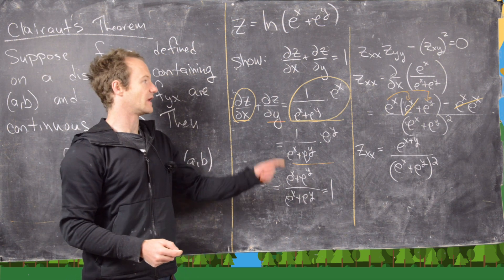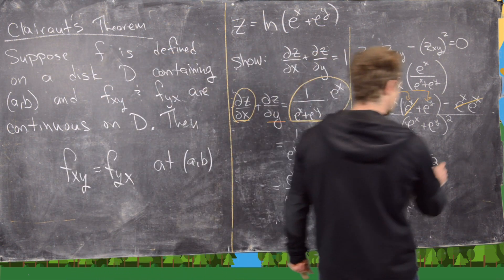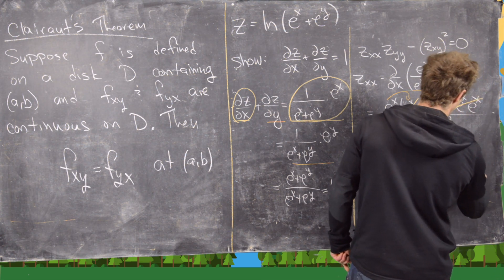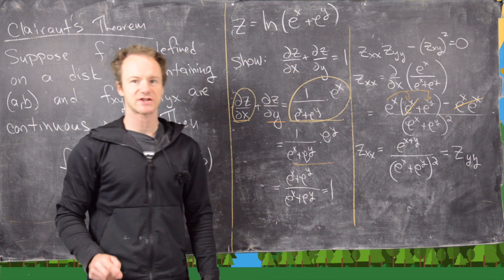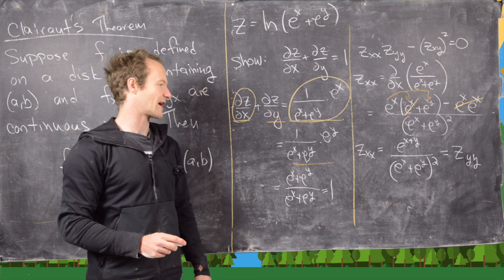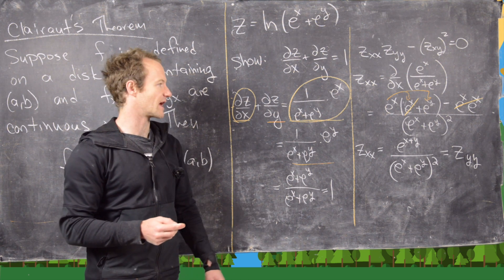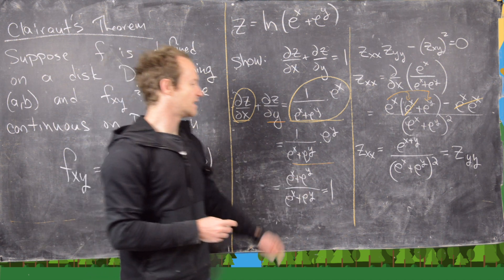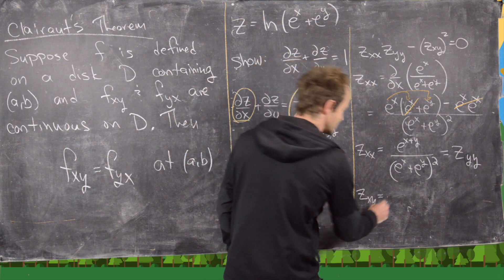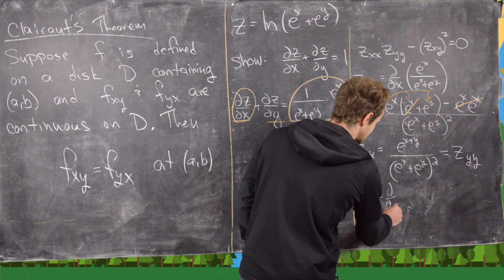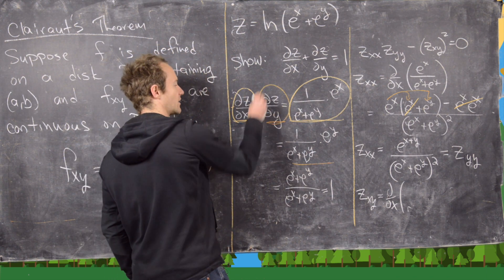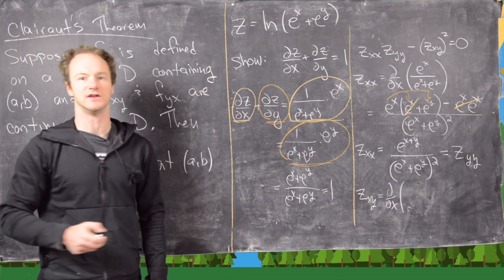Due to the symmetry of the function in x and y, z_yy is also equal to e^(x+y) / (e^x + e^y)² — you can verify this easily. Now let's find z_xy, which means taking the partial with respect to x of ∂z/∂y. We already calculated ∂z/∂y = e^y / (e^x + e^y), so we use that.